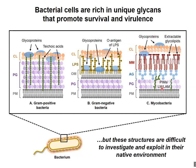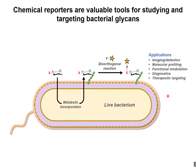One technique that's gained a lot of traction over the last ten years is the chemical reporter strategy, pioneered by the Bertozzi group, which has been applied broadly in glycoscience, including bacterial systems. This is a two-step molecular labeling technique where a chemical reporter containing a bio-orthogonal functional group — often an azide — is fed to the bacterium and metabolically incorporated into a glycoconjugate of interest on the cell surface. It can then undergo a highly selective reaction with a complementary functional group, often an alkyne connected to chemical cargo, enabling downstream analysis or other applications.